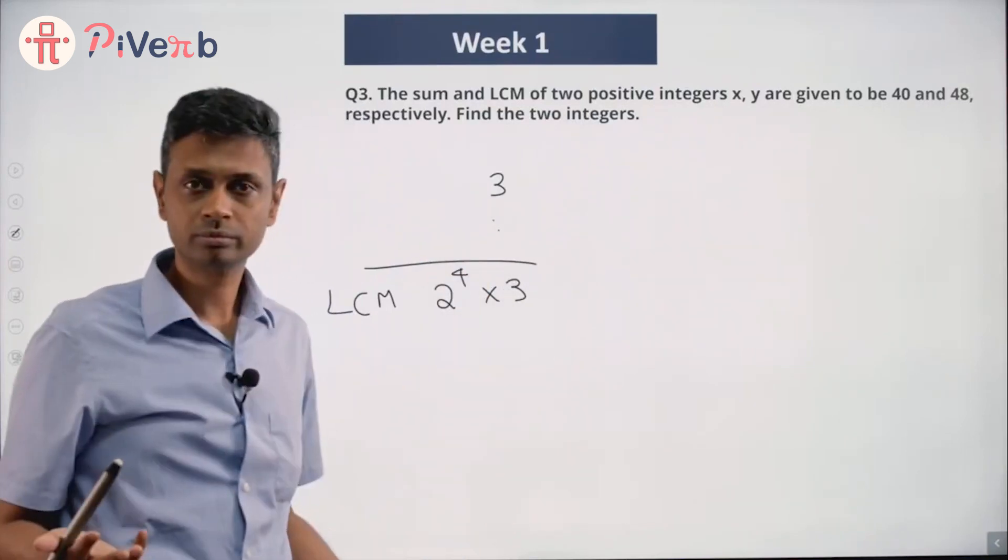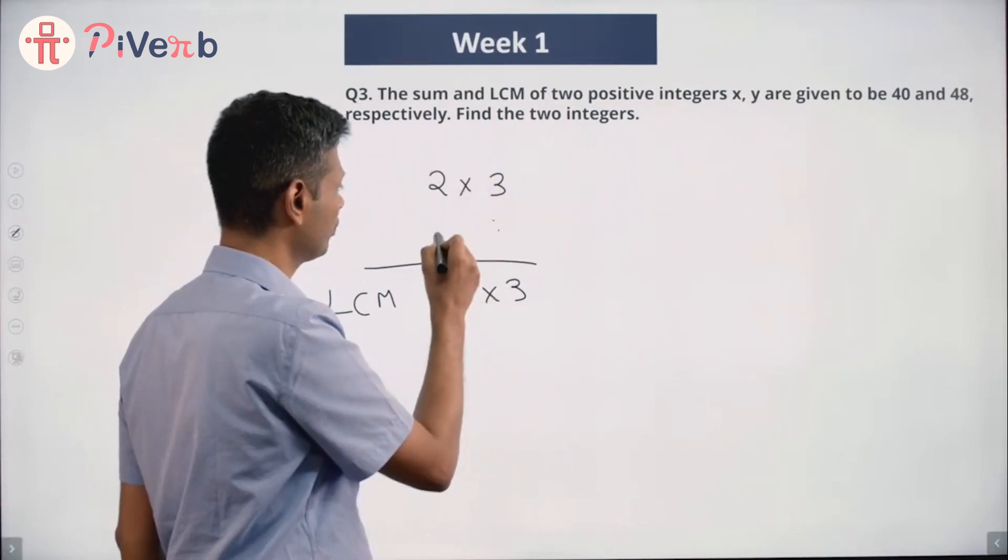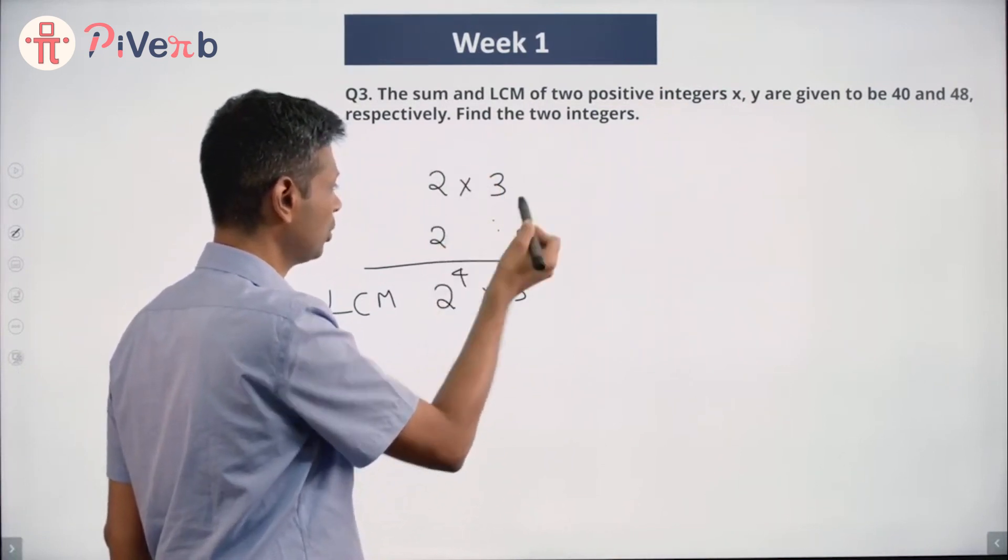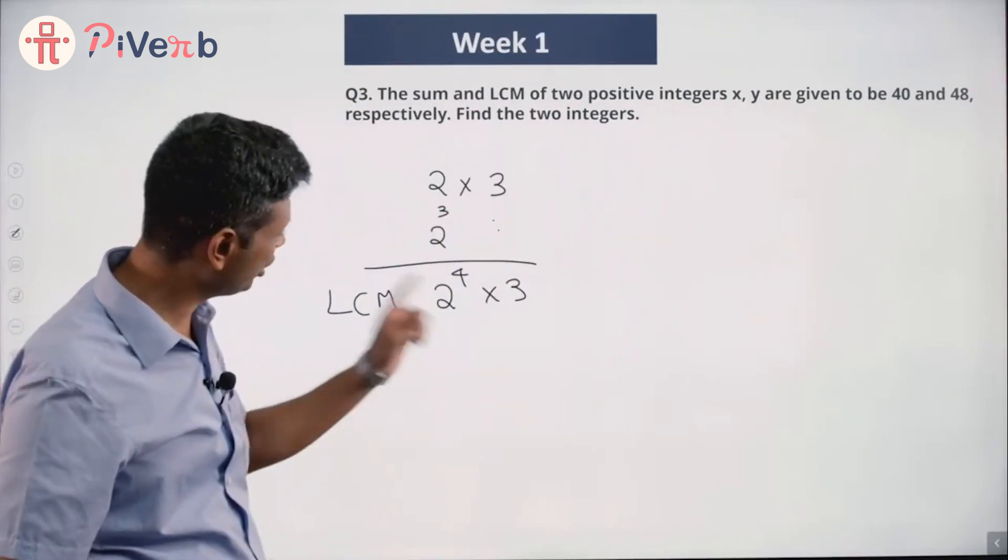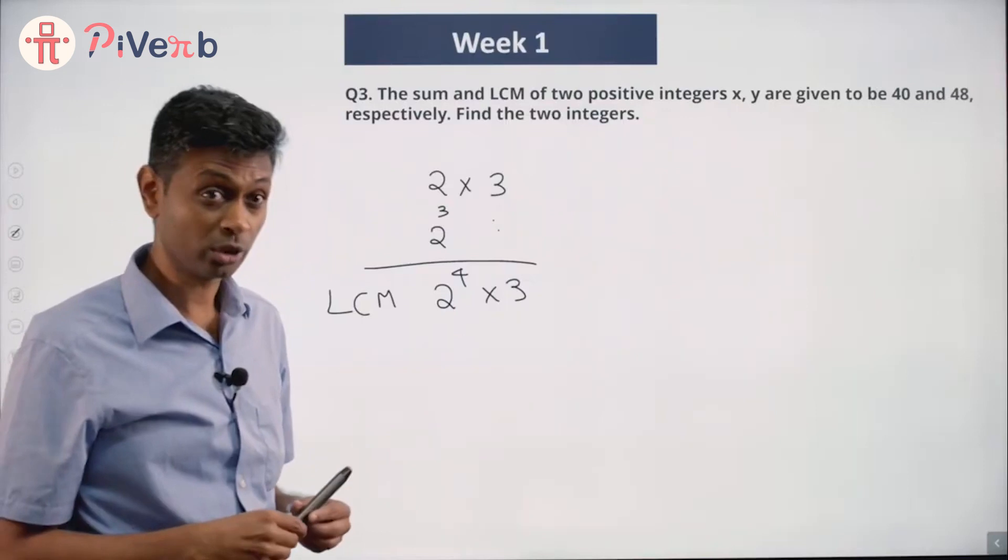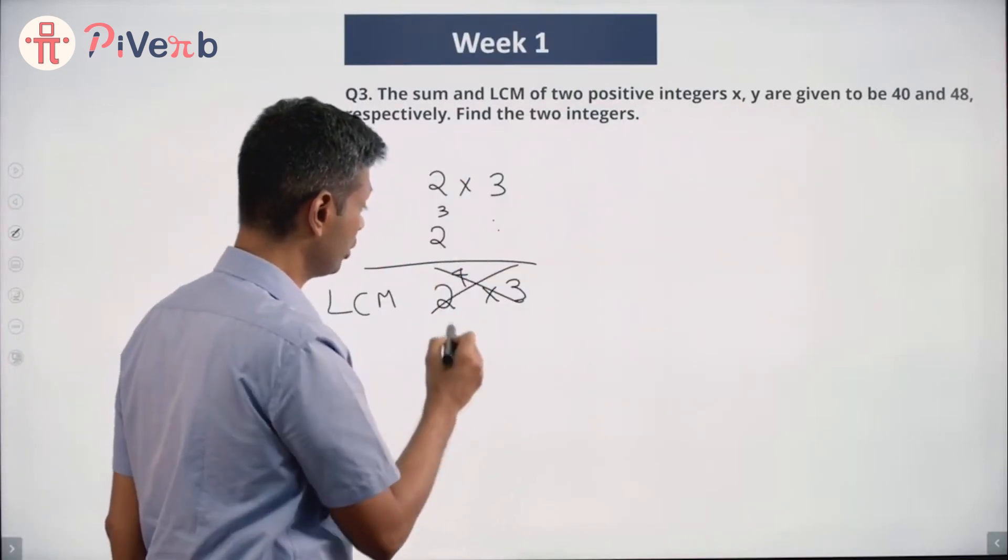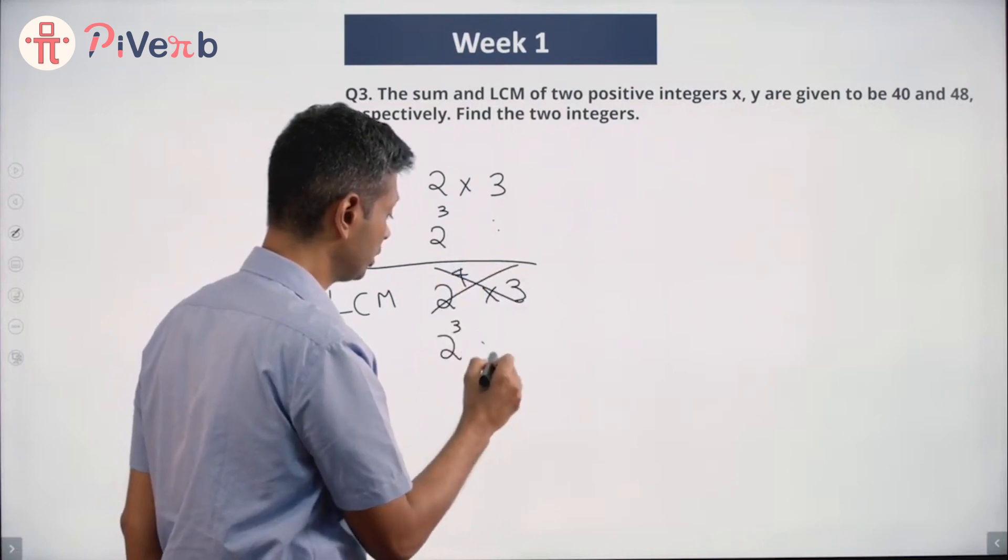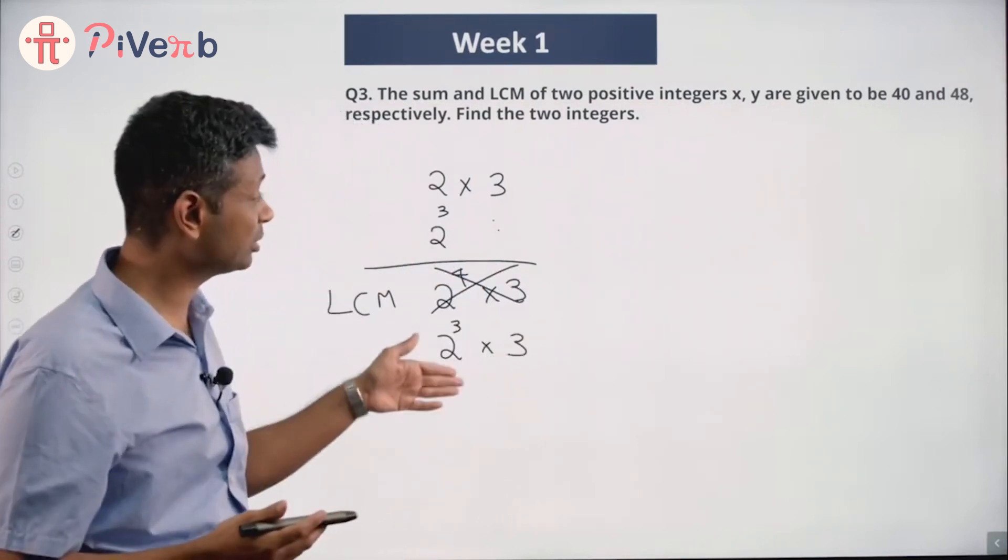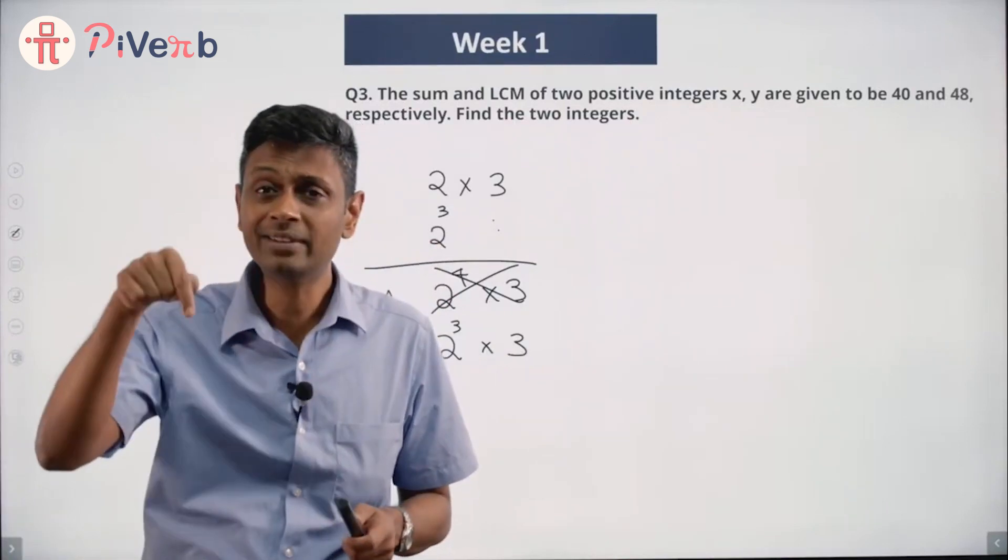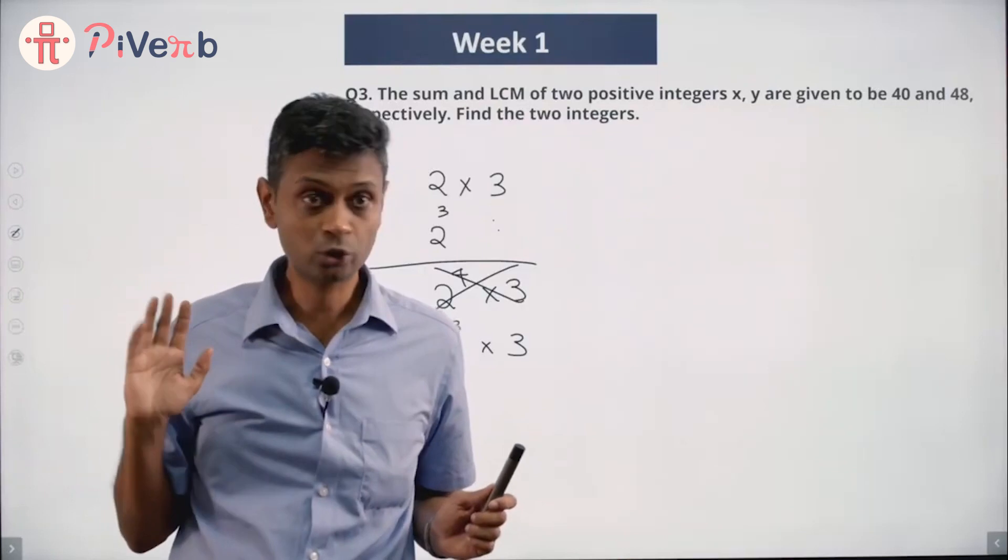One of the numbers should have 2. Let's say this number is 2 into 3. Another number has 2 but not 3, say 2 cubed. Will the LCM be 2 to the power 4 into 3? Think about it. For these two numbers, the LCM is not 2 to the power 4 into 3; it's 2 cubed into 3. The highest power of 2 that sits in any of these numbers is only 2 cubed, so why should my LCM have 2 to the power 4? Not required.